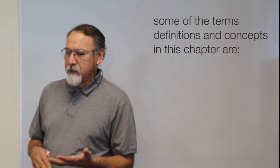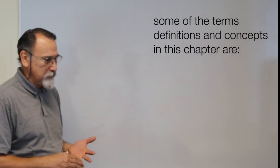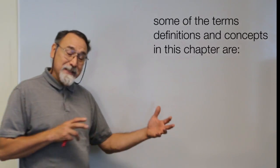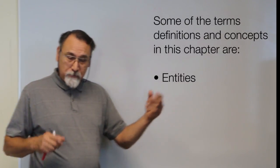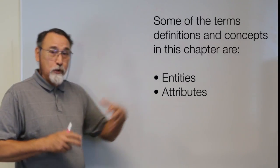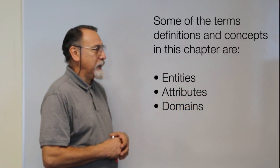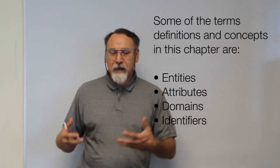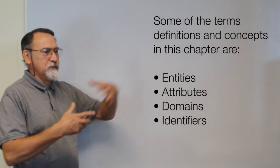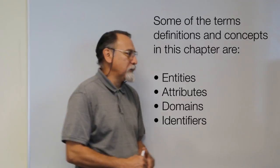As in any process, when you begin with new ideas, this chapter will have new terms, definitions, and concepts. To deal with those, we'll be using entities, attributes, domains, and identifiers — four general concepts that will be used to explain the process.